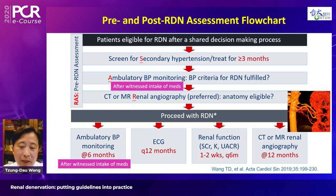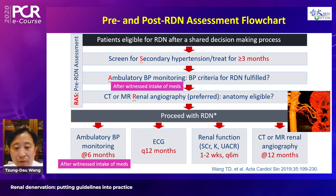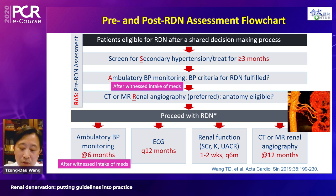Around 20 to 30% of patients have accessory or multiple renal arteries that can only be identified by CT angiography or detailed aortogram analysis. Post-RDN assessment includes follow-up CT and ambulatory blood pressure monitoring.